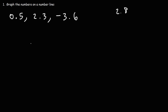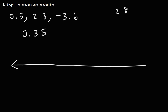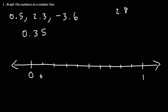Now let's say we want to plot 0.35 on a number line. We know 0.35 is between 0 and 1, so let's break this down into 10 equal spaces: 0.1, 0.2, 0.3, 0.4, and 0.5. Now, 0.35 is the midpoint of 0.3 and 0.4, so it's going to be right in between those two numbers. That's a basic introduction to plotting decimal numbers.